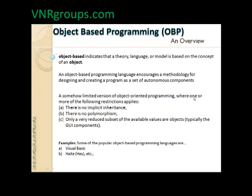The key difference between object-based and object-oriented programming is that object-based doesn't support a couple of features like inheritance. Although it can still define classes, create instances, make objects, do overloading, overriding, polymorphism, encapsulation, and abstraction — you cannot do inheritance. That's when it becomes object-based programming, but it's not object-oriented programming.